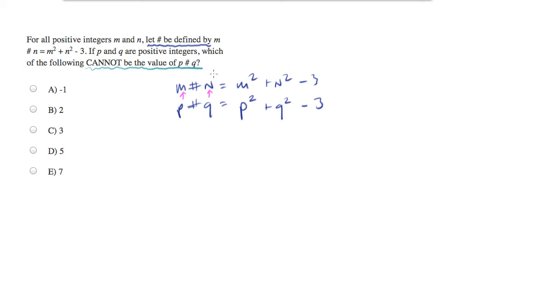Now the value of p hash q can be many, many things. There's an infinite list of things that it could be. So at first it appears that this is an impossible task, because surely we can make p hash q equal any of those numbers. But there's a hidden constraint. The hidden constraint is that p and q are positive integers. This severely restricts what we can and cannot do with the value of p hash q.